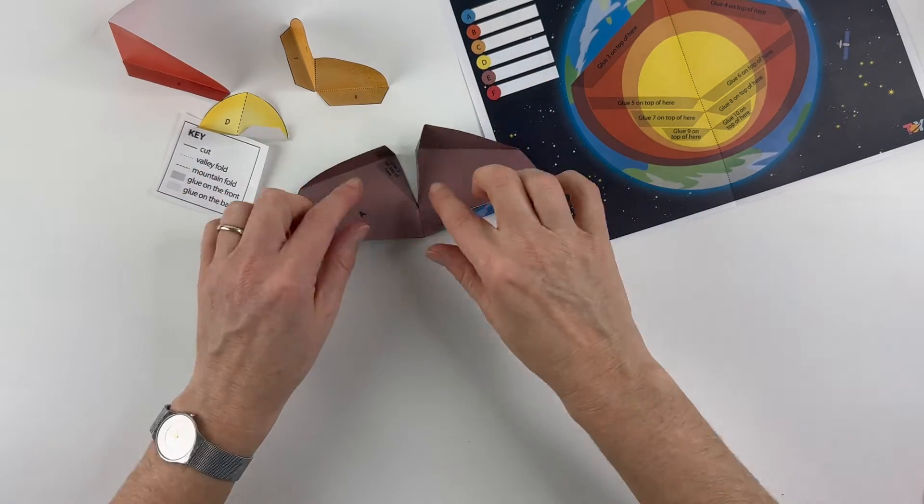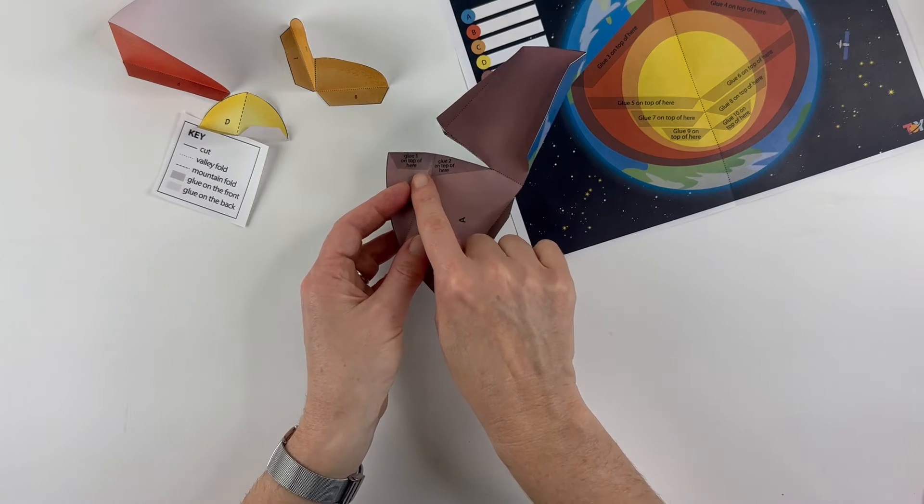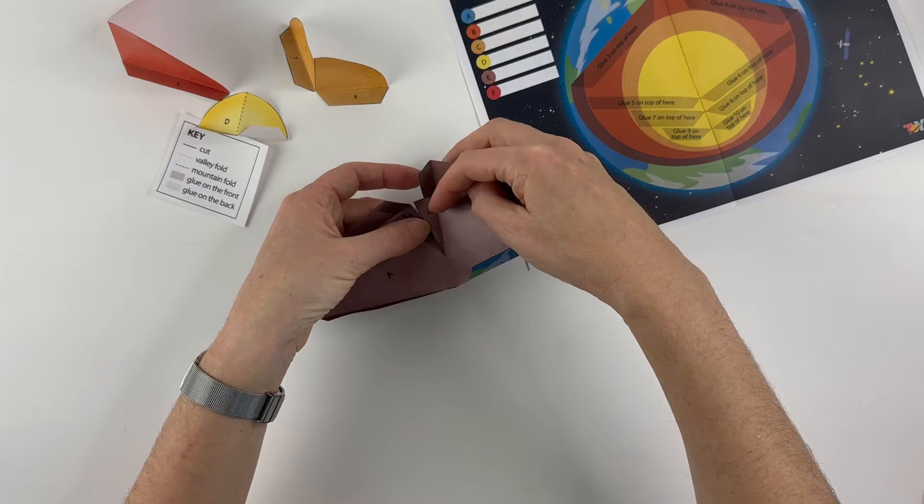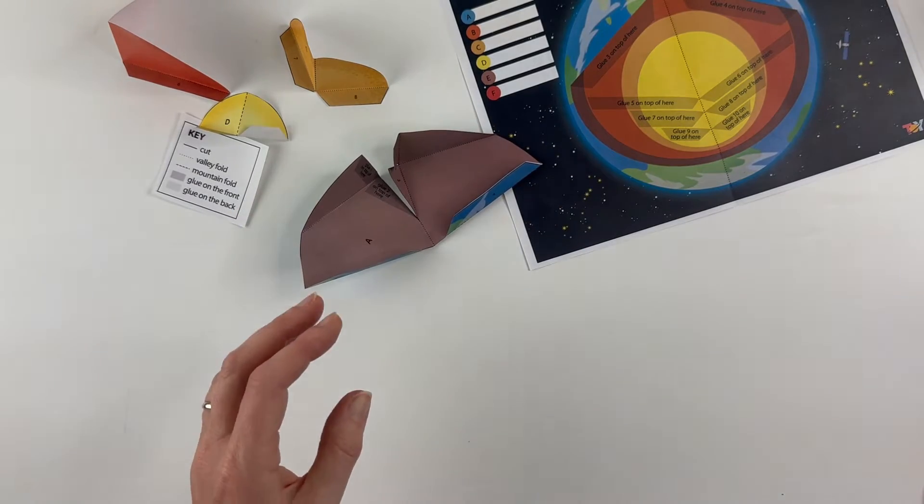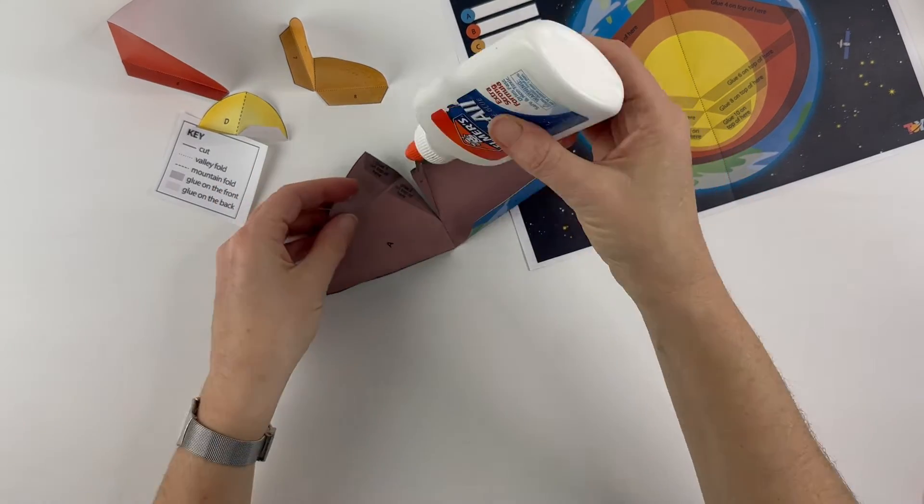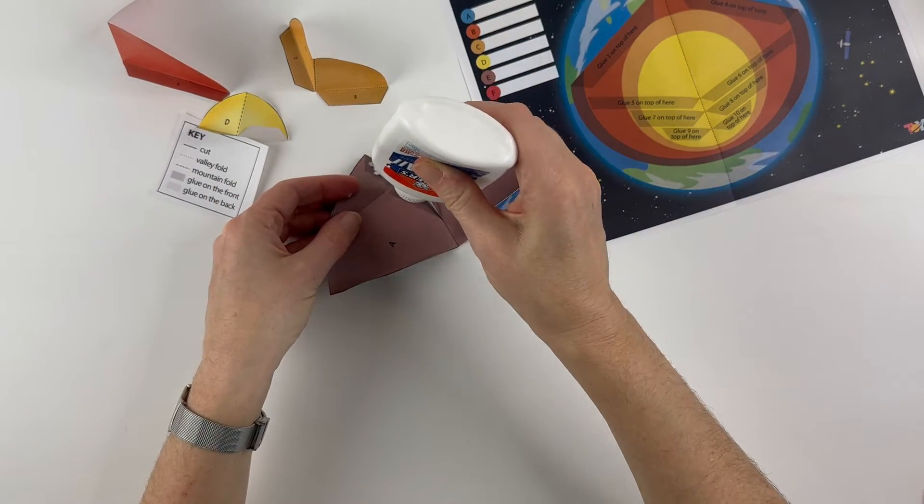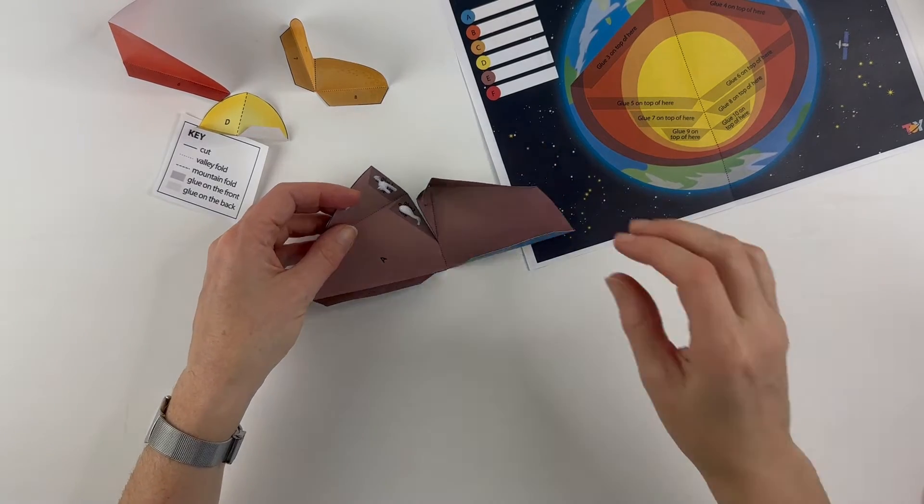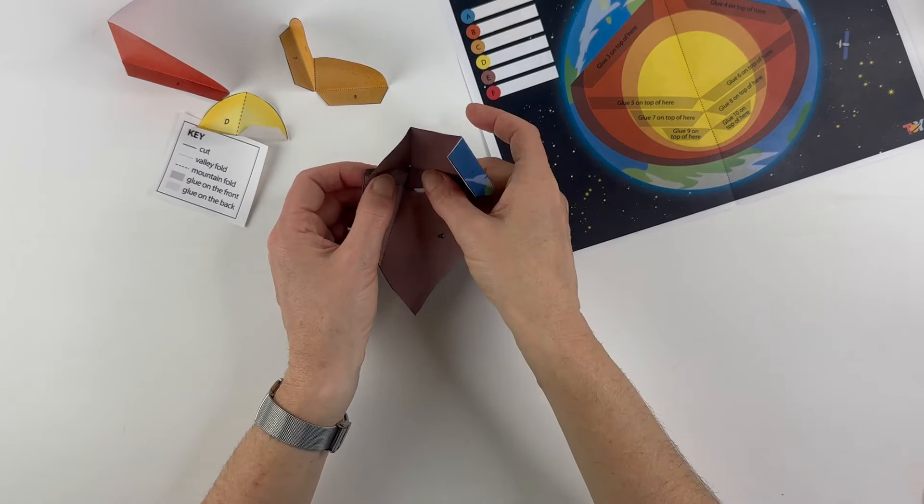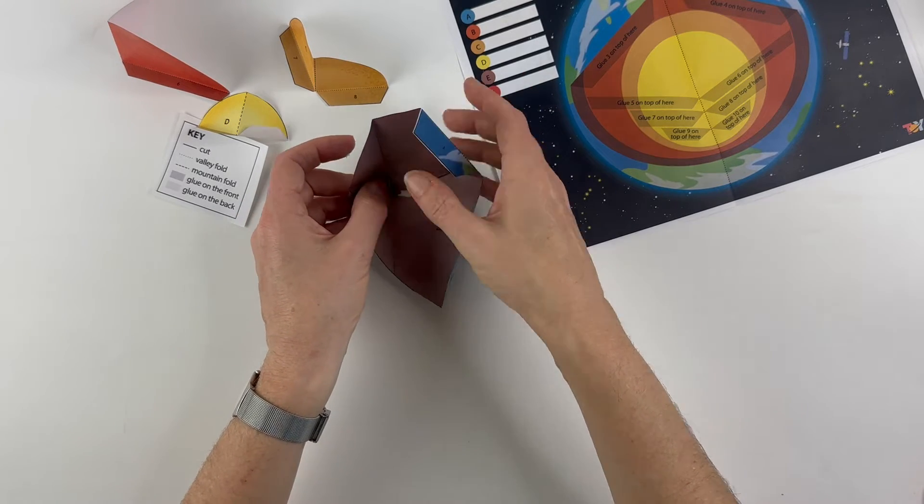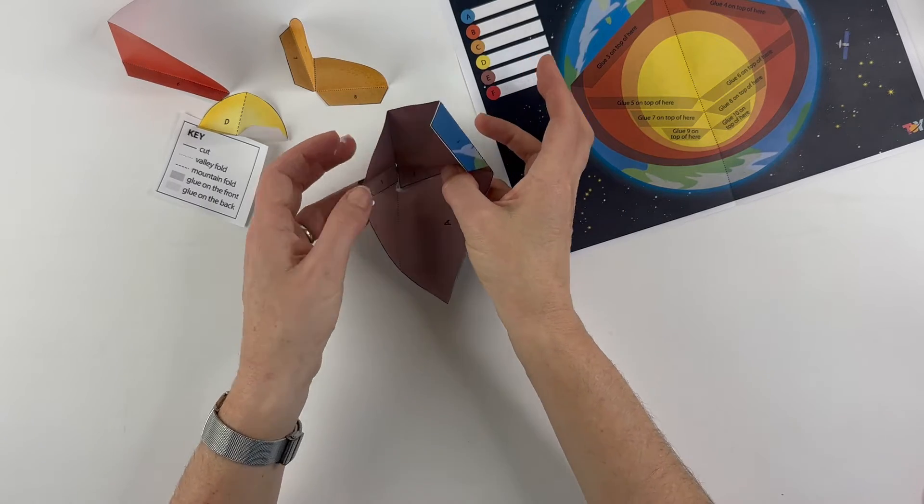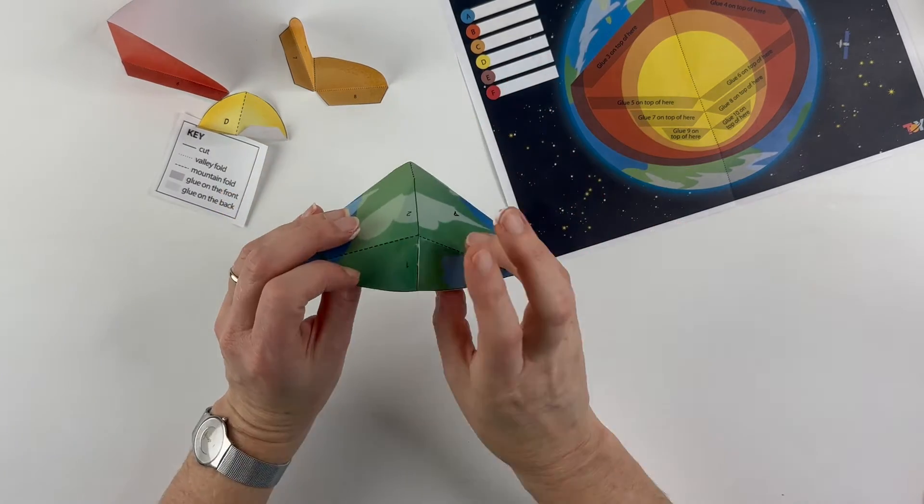Okay, now this one needs a little bit of glue. You'll notice it says glue one on top of here, glue two on top of here. And these are one and two. So I'm just going to take a little bit of glue, put some here and here. Like that. Okay, so that's the crust of my earth.